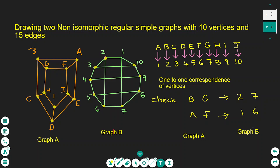To show they are not isomorphic, we draw a one-to-one correspondence of vertices, as shown in the table on the right. I list the vertices of graph A and below I list the vertices of graph B, making the correspondence: A to 1, B to 2, C to 3, D to 4, E to 5, F to 6, G to 7, H to 8, I to 9, and J to 10.